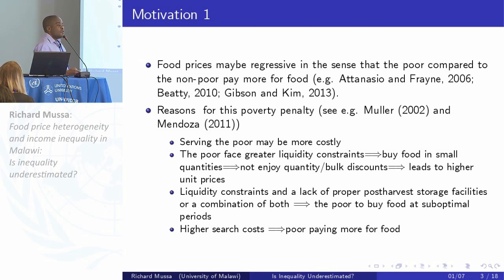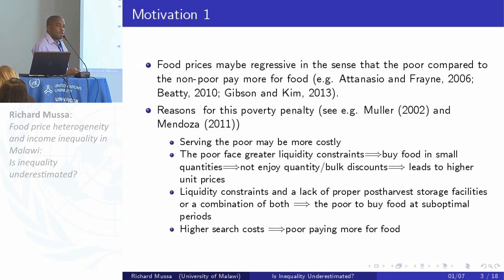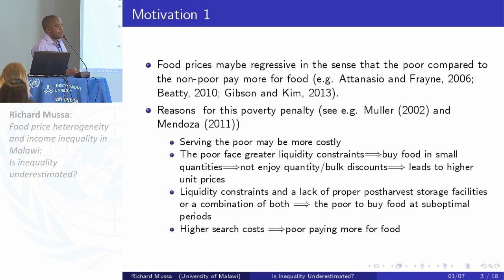One key reason is that it may be more costly to serve the poor — maybe they're staying in remote areas or where it's not safe, and therefore you have to impose a premium to cover the costs. The poor may also face liquidity constraints, which means they buy food in smaller quantities and cannot enjoy discounts, leading to them paying higher prices.